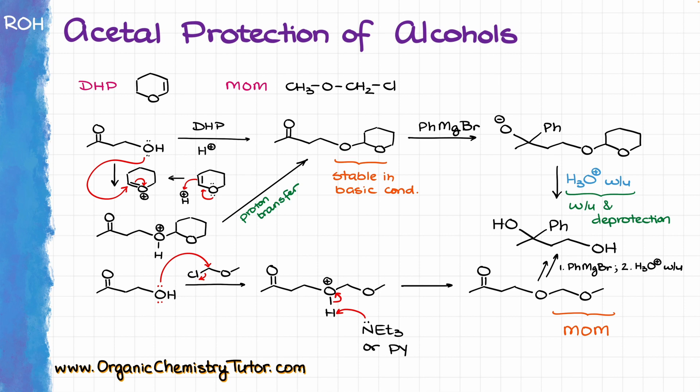If you opt to use one of these two protecting groups, you should probably go with DHP unless your substrate is really sensitive towards acids. While MOM is an excellent protecting group, the reagent used — MOM chloride — is quite toxic and carcinogenic, so you should definitely avoid it at all costs.